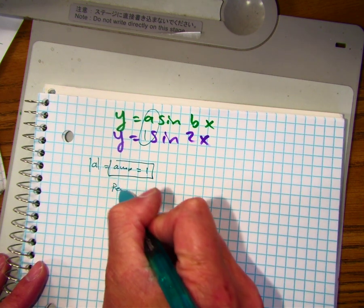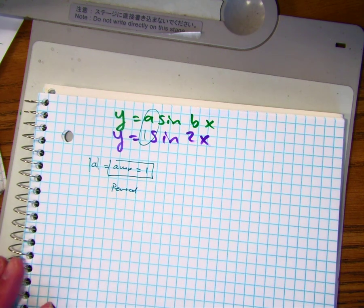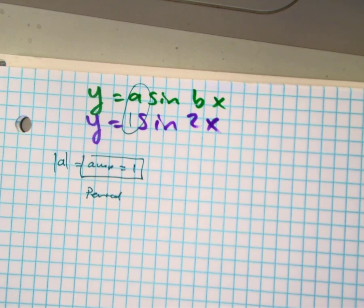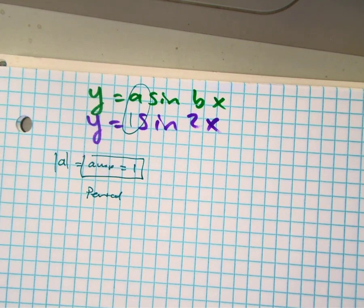Now in this problem it asks you to find the period. The period has a formula. Partner B, tell partner A what's the formula? John B, tell us the formula.